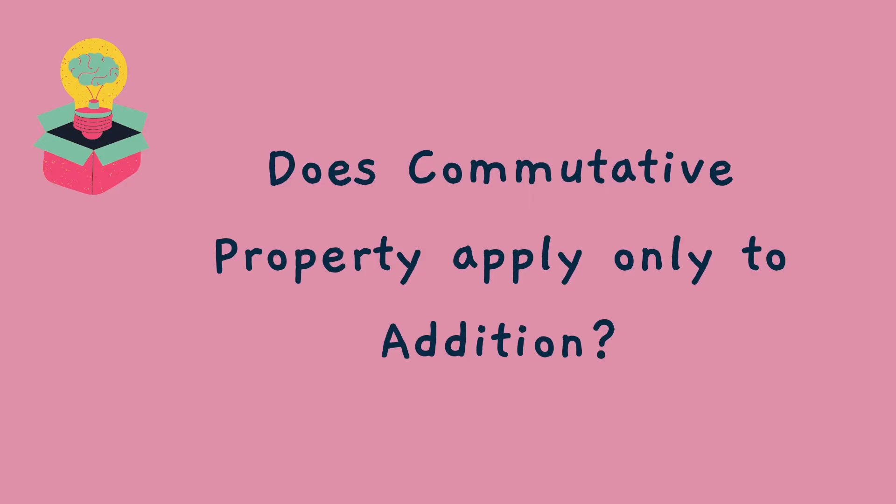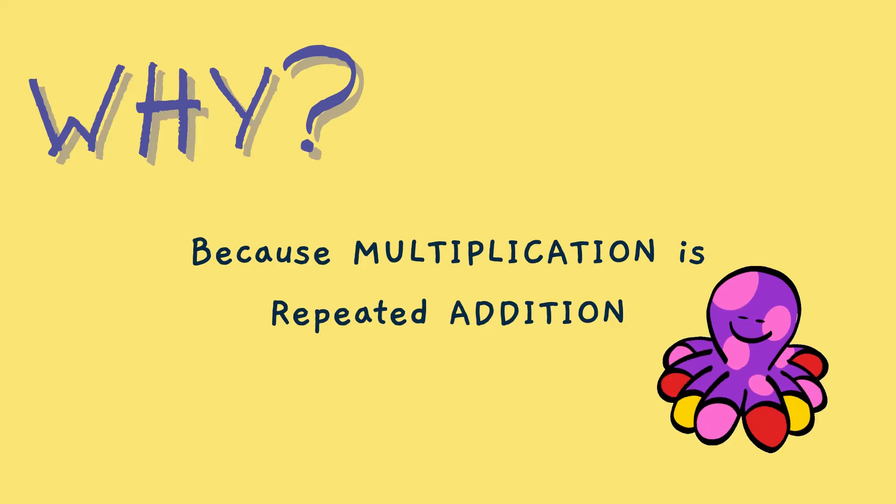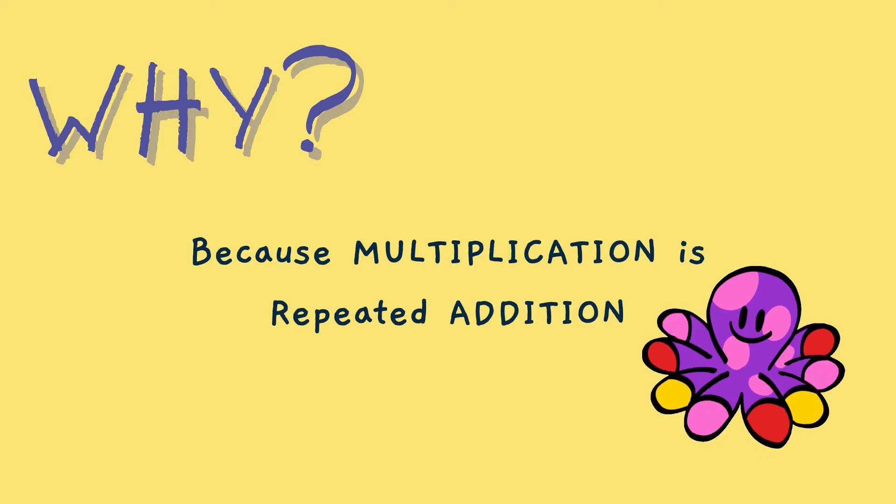Does commutative property apply only to addition? Nah! It also applies to multiplication. Here 3 times 2 is equal to 6. And also 2 times 3 is also equal to 6. Why? Because multiplication is repeated addition.